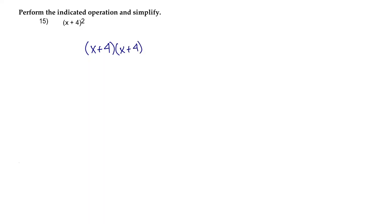When we have binomials that we need to multiply together, we use the acronym FOIL, which stands for First, Outer, Inner, Last.